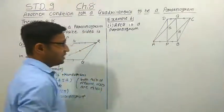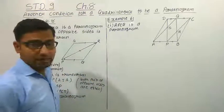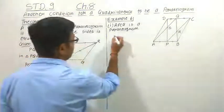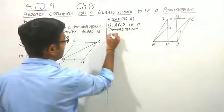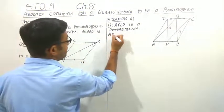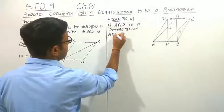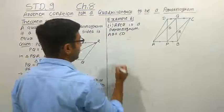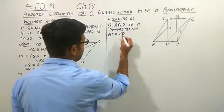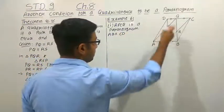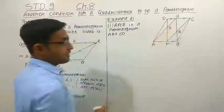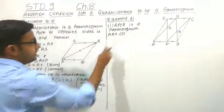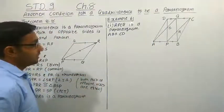Here we have given that ABCD is a parallelogram. In a parallelogram, opposite sides are parallel. So we can write down that AB is parallel to CD.